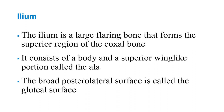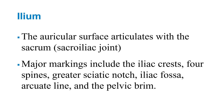The ilium is a large flaring bone that forms the superior region of the coxal bone. It consists of the body and a superior wing-like portion called the ala. The broad posterior lateral surface is called the gluteal surface. The auricular surface — where it articulates with the sacrum — kind of looks like an ear, and that forms the sacroiliac joint. Major markings include the iliac crest, four spines, greater sciatic notch, iliac fossa, arcuate line, and the pelvic brim.